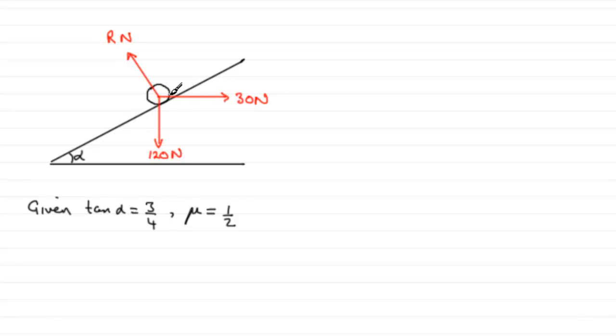We also know that it is on a rough plane, so friction is going to act. We're told that it's held in equilibrium. So we don't know which way the friction is going to act. Is this particle going to be moving up the plane? Or is it going to be just on the point of moving down the plane? We really don't know. Now, as it turns out, it doesn't matter which way we put the friction because it's going to be acting perpendicular to the R. We'll just put the friction this way, assuming that the particle is going to move up the plane. Let's just call that F newtons for the friction.